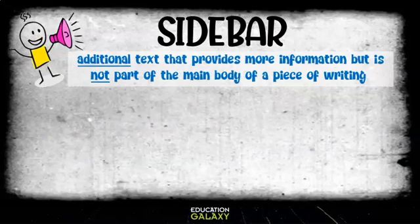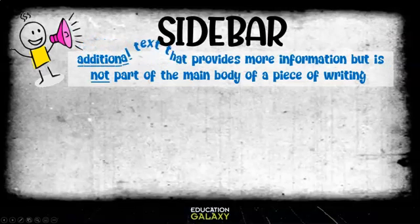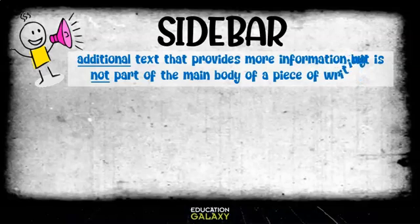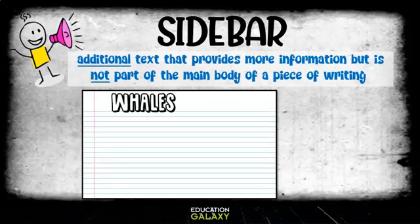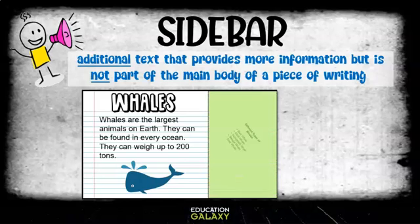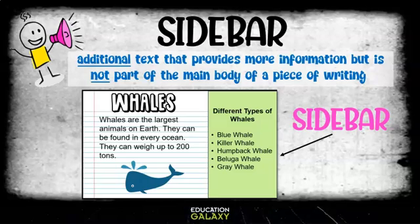Now let's talk about a sidebar. A sidebar gives us additional text that provides more information but is not part of the main body of a piece of writing. Here I have a paragraph about whales, and out to the side I see a green rectangle that tells me different types of whales. The green rectangle is the example of a sidebar — it gives us a little bit more information about whales that we didn't get from our paragraph.